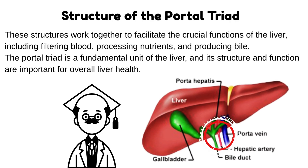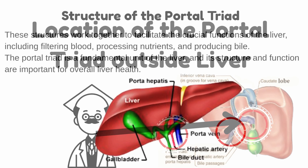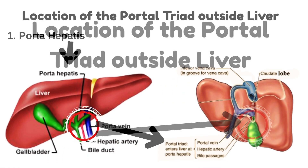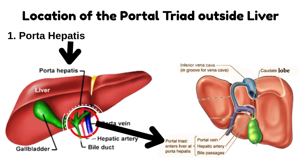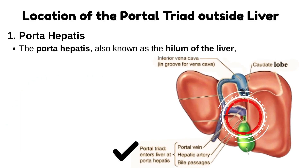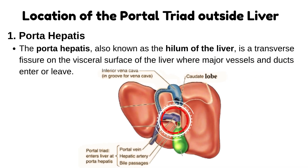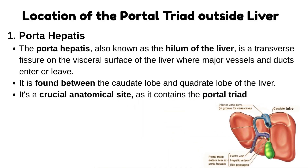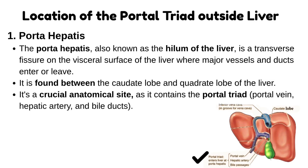Its structure and function are important for overall liver health. What is the location of the portal triad outside the liver? Number 1: Porta Hepatis. The porta hepatis, also known as the hilum of the liver, is a transverse fissure on the visceral surface of the liver where major vessels and ducts enter or leave. It is found between the caudate lobe and quadrate lobe of the liver, and it contains the portal triad — portal vein, hepatic artery, and bile ducts.